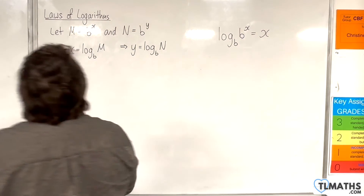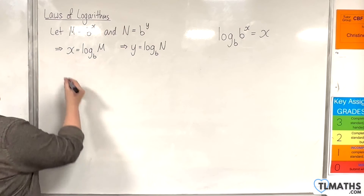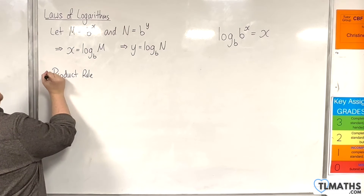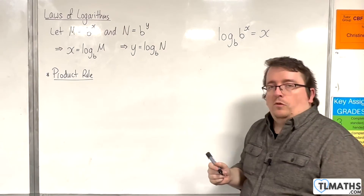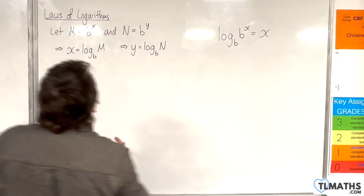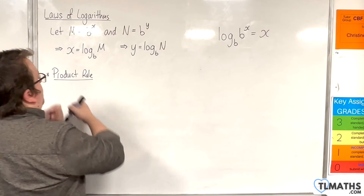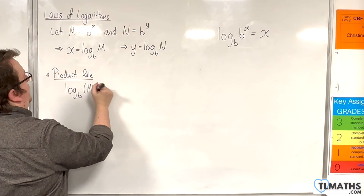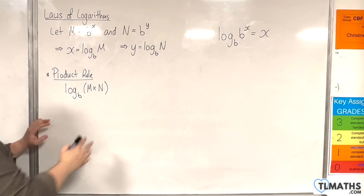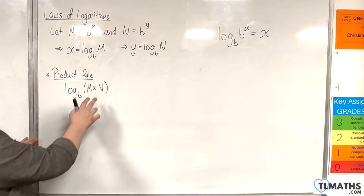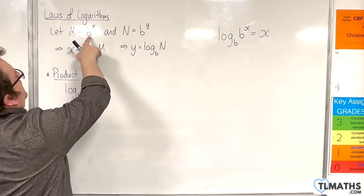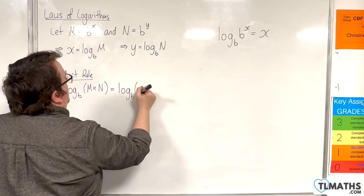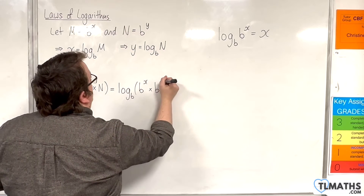The first law of logarithms is referred to as the product rule. The product rule looks at a product — we're going to be multiplying M and N together within a logarithm. So we're going to have log base b of M times N. M and N, we know, are b to the x and b to the y — that's how we defined them. So we can write this as log base b of b to the x times b to the y.